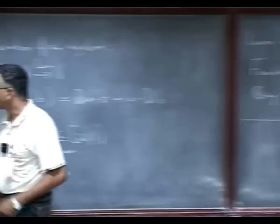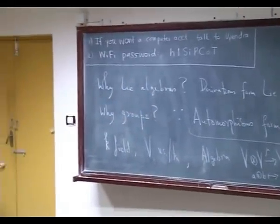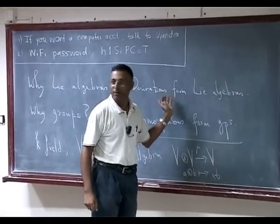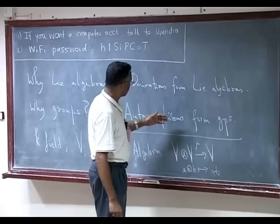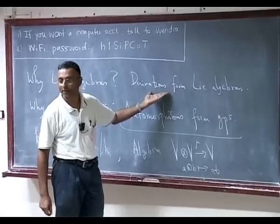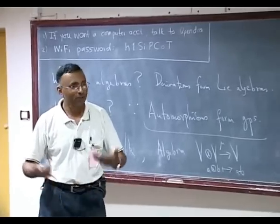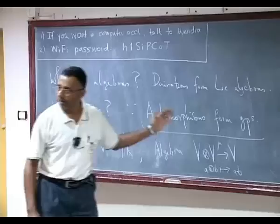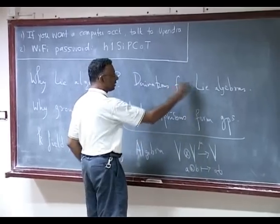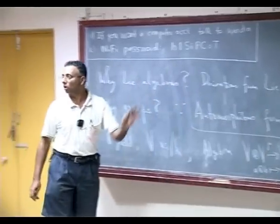So, to summarize: automorphisms form groups, derivations form Lie algebras — that is the reason to study Lie algebras. But you might ask: why study derivations in the first place? Automorphisms are symmetries, that seems natural. But there is a deeper relation, and I want to talk about that. Assume V is a finite dimensional algebra. Then Aut(V) sits inside GL(V) by definition — these are linear automorphisms — and GL(V) sits inside End(V).